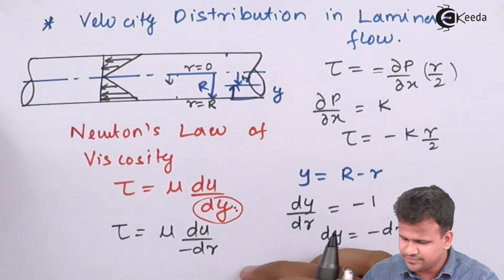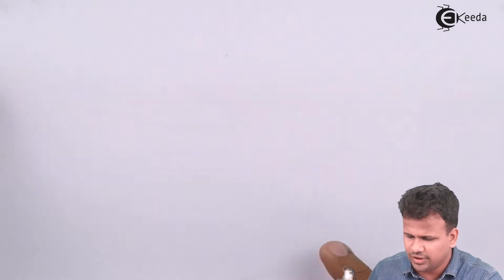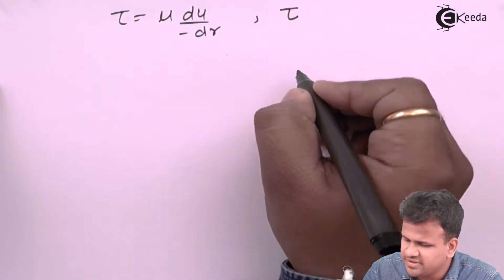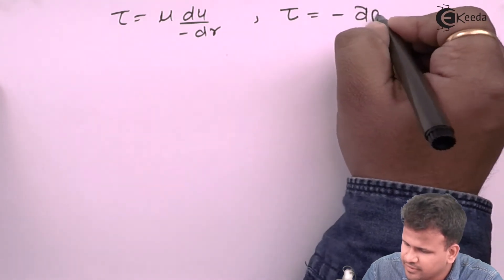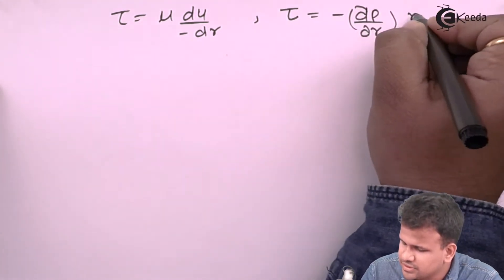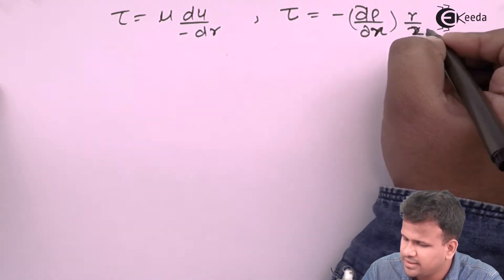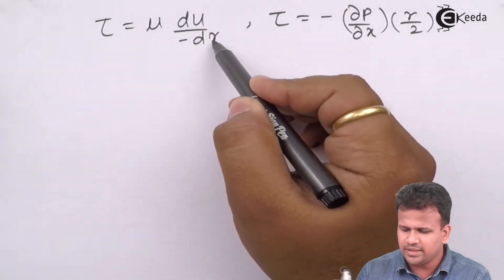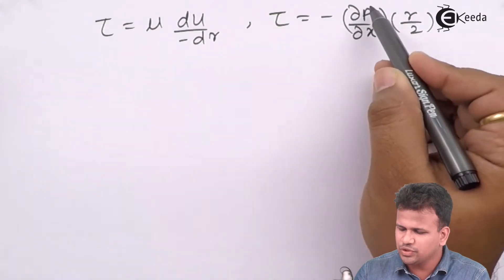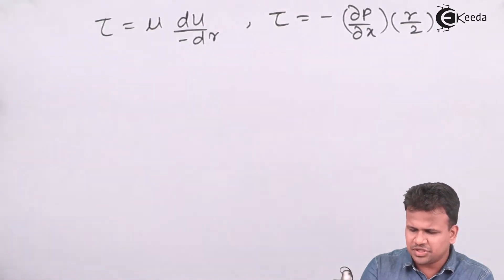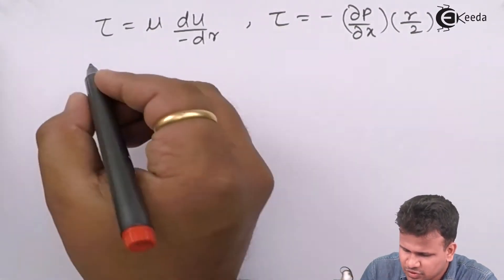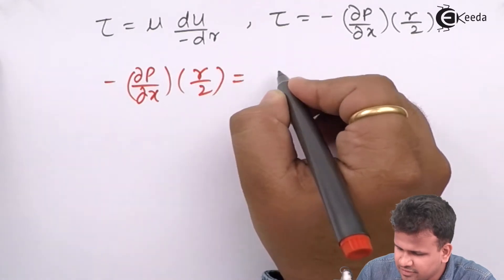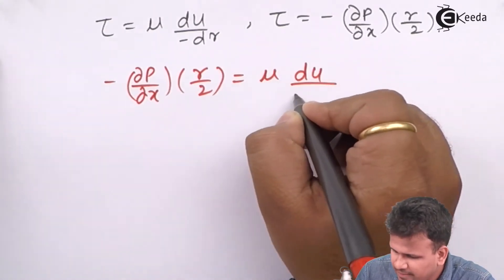Let us substitute this. According to Newton's law, tau equals mu times du/(minus dr), and from the previous part we have tau equals minus (∂p/∂x) times r/2. Substituting the value of tau, we get: minus (∂p/∂x) times r/2 equals mu times du/(minus dr).